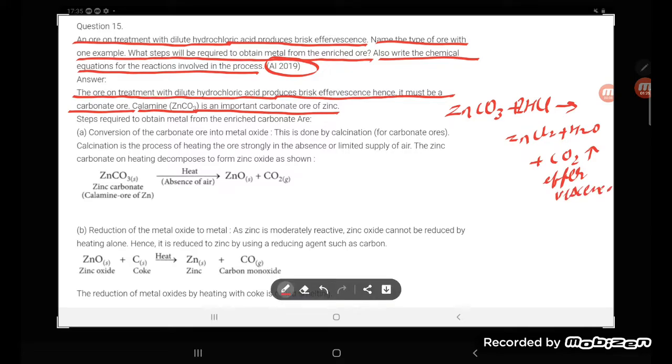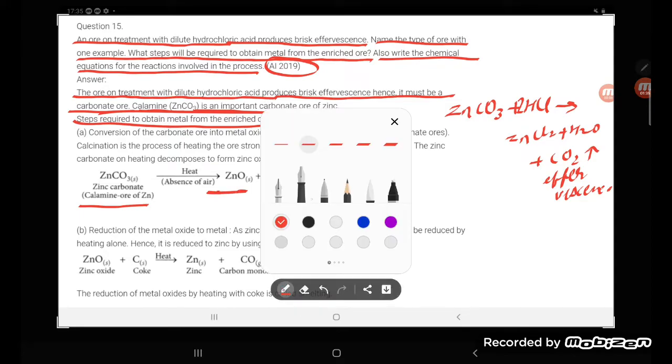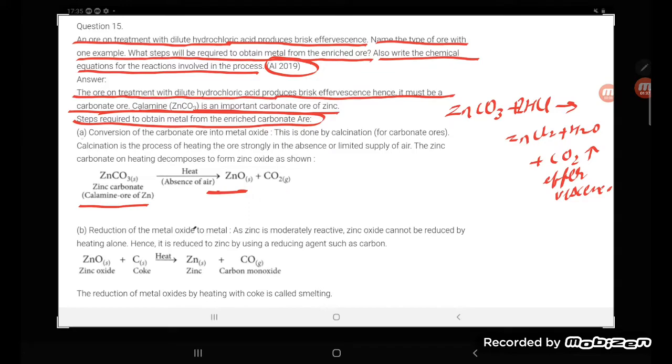Steps required to obtain metal from enriched ore: First, convert carbonate ore into metal oxide. This is done by calcination. Calcination is the process of heating the ore strongly in the absence or limited supply of air.